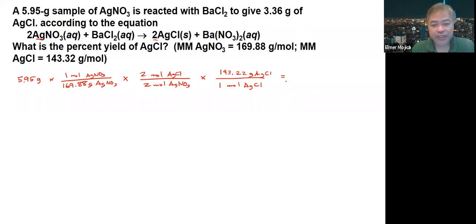Okay, so based on the calculation here, this is the theoretical yield of your 5.95 grams sample of silver nitrate. It will produce 5.02 grams of the silver chloride.